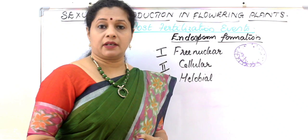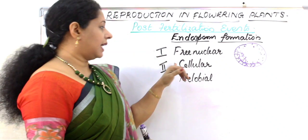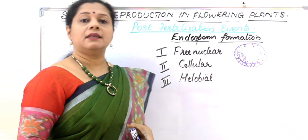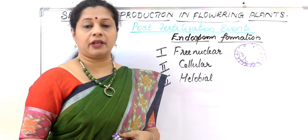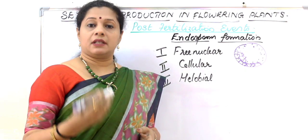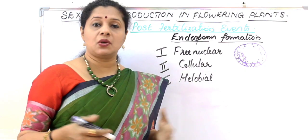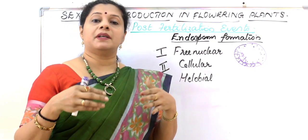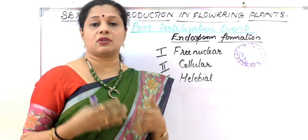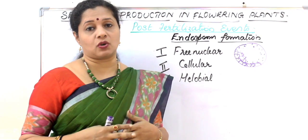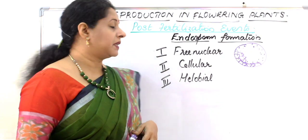Free nuclear endosperm development is common in coconut, rice, wheat, etc. The second type is called cellular endosperm. In cellular type, like typical division, as soon as the nucleus divides, cell wall formation also occurs — cytokinesis also happens — forming a cellular endosperm directly.